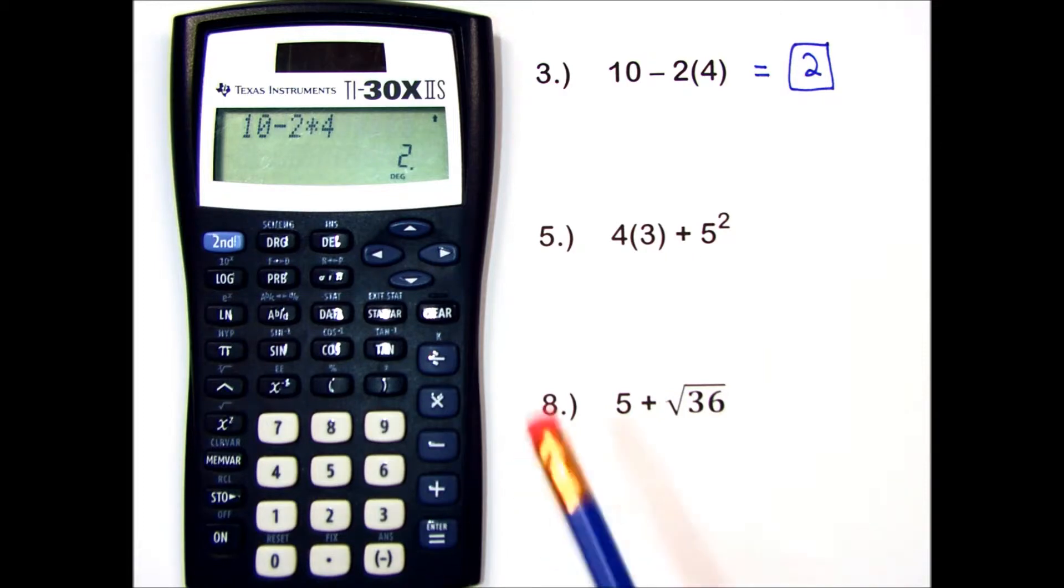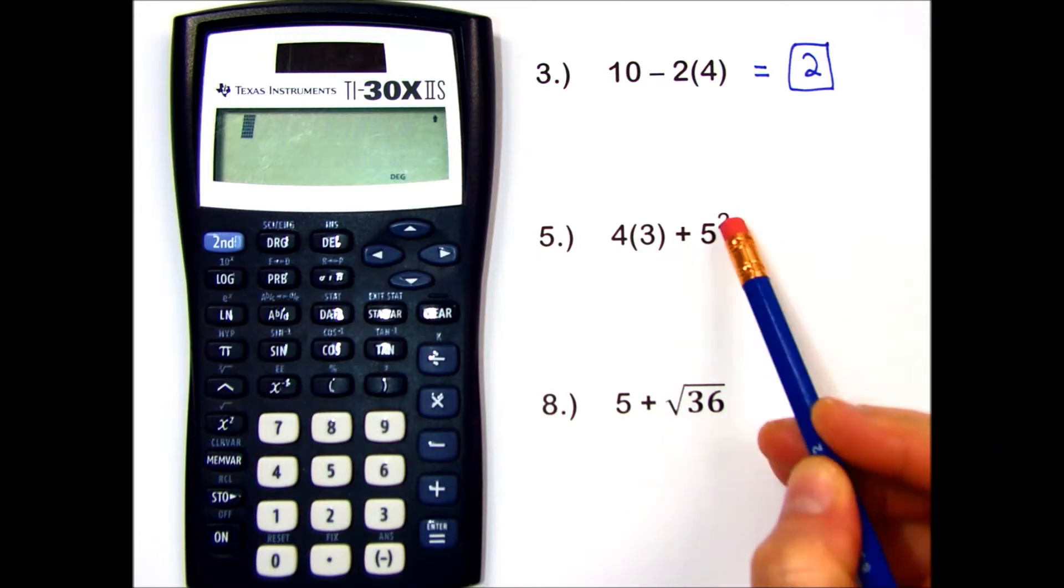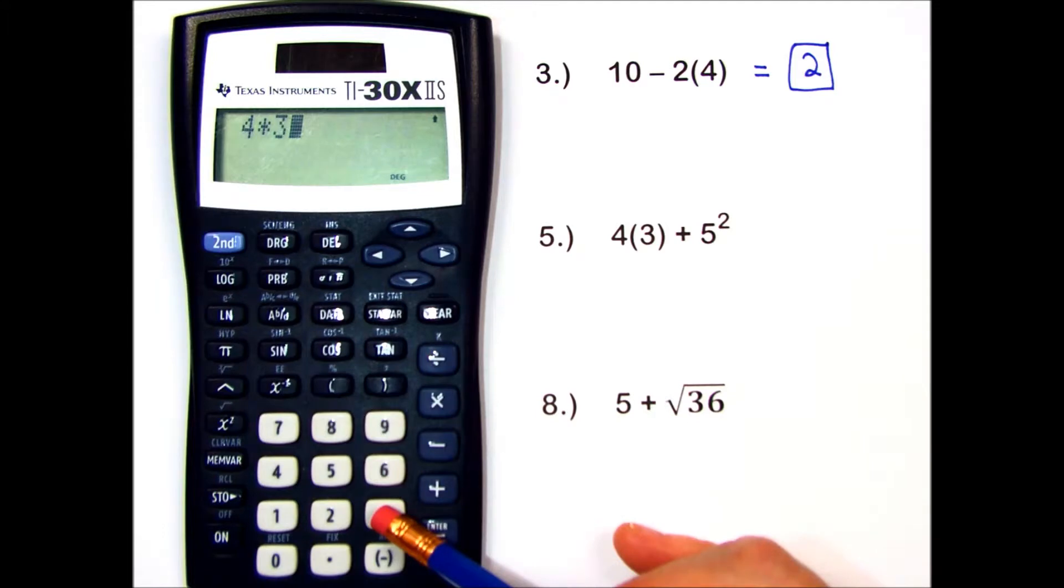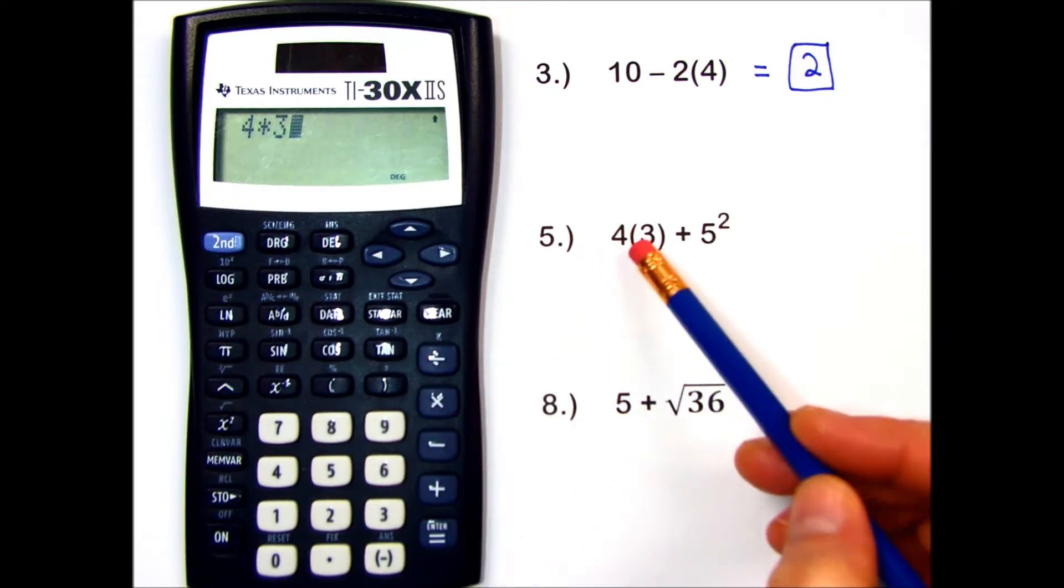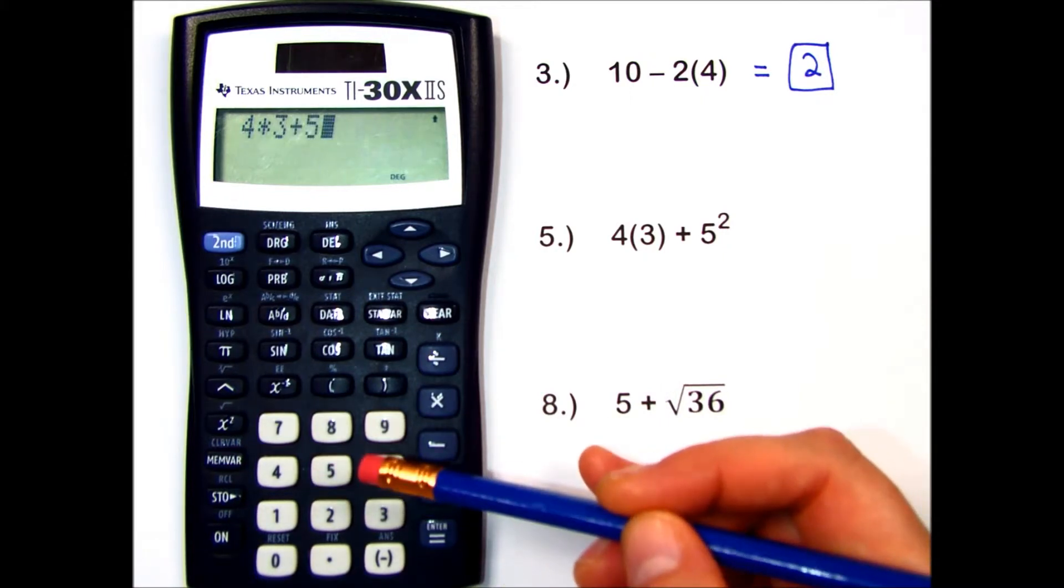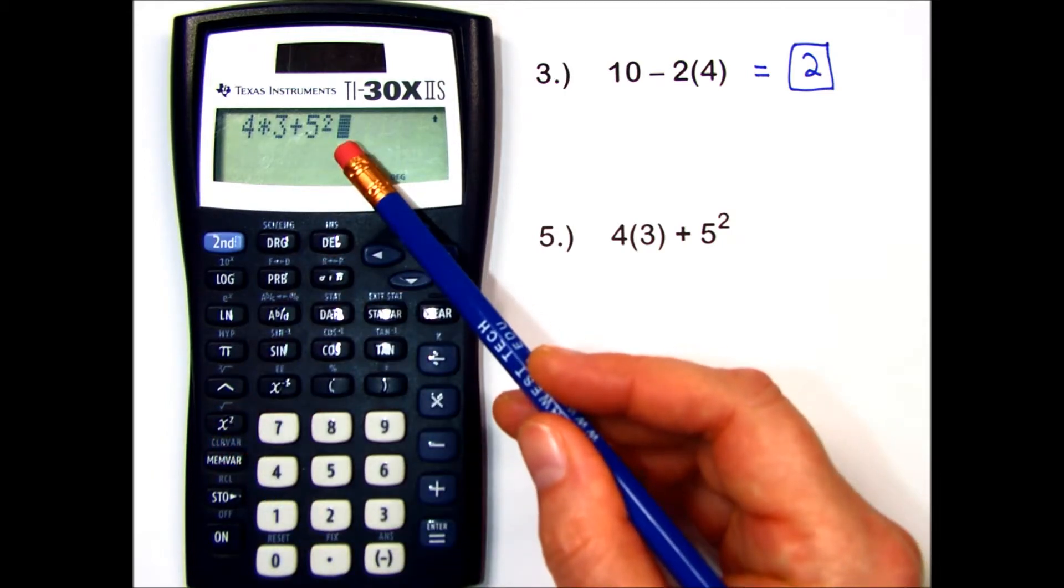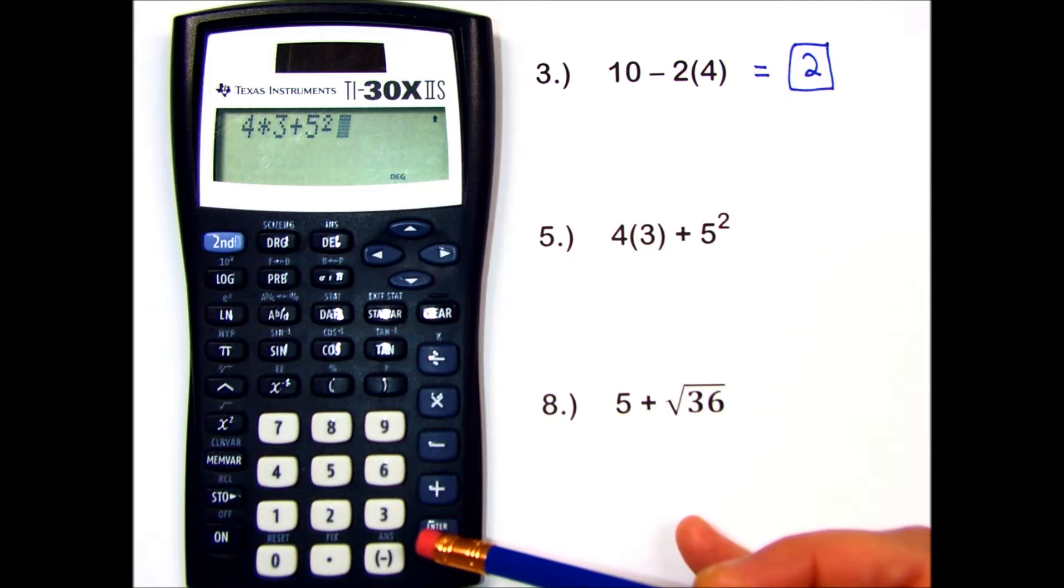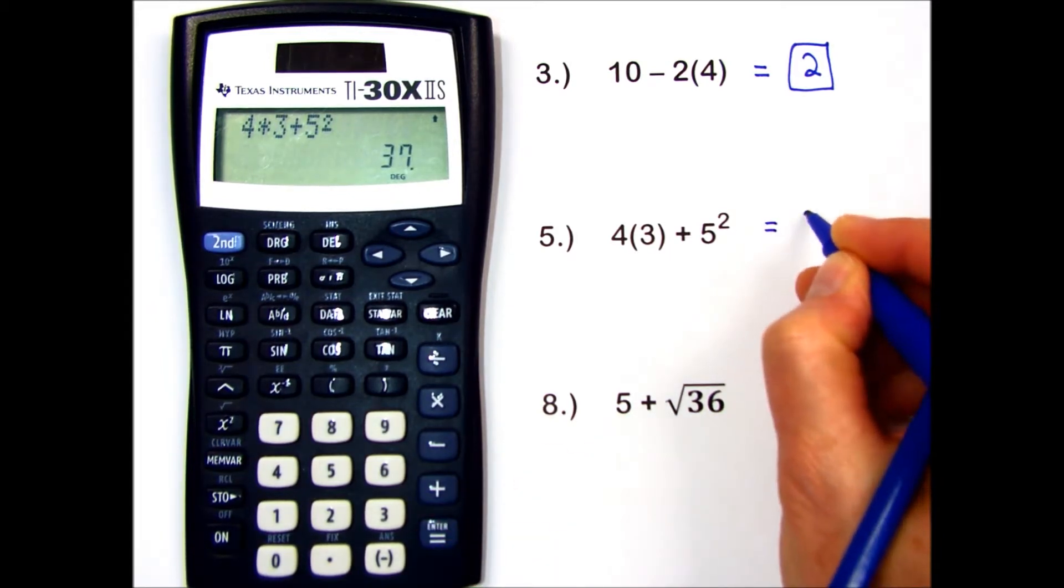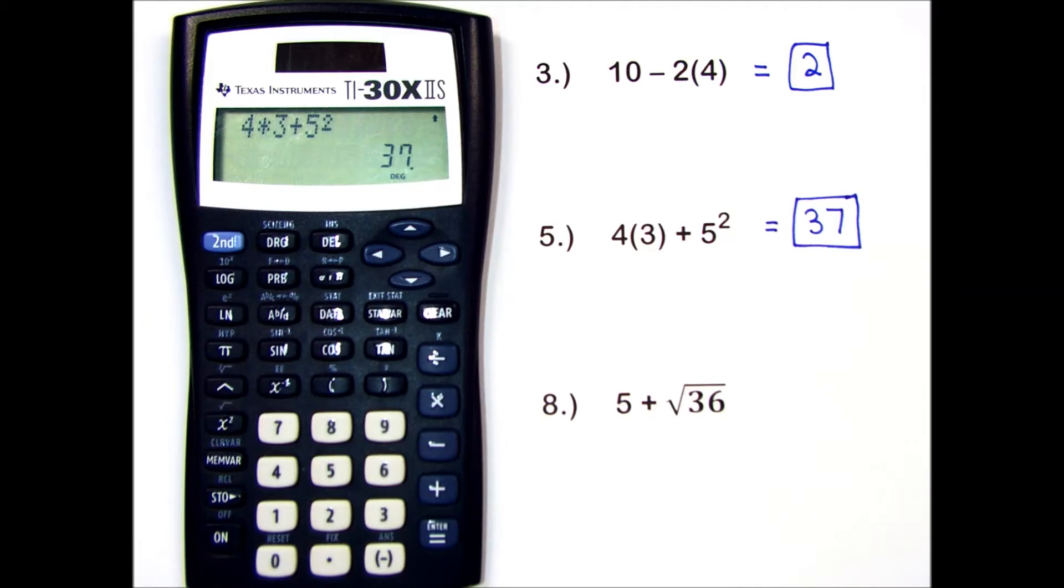In problem number 5, I have 3 operations: multiplication, addition, and a power. Let's try this together. 4 times 3, and I used my times key, even though it's not written on paper, plus 5, and I will make use of my x squared button to square that 5. When I press equals, the answer appears with the calculator having used the correct order of operations.